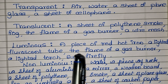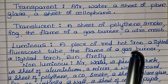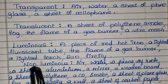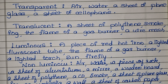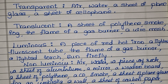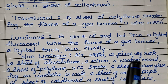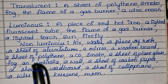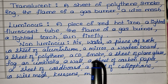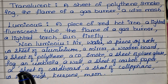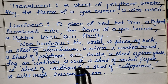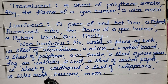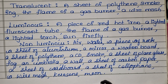Luminous — a piece of red hot iron, a lighted fluorescent tube, the flame of a gas burner, a lighted torch, sun, firefly. Non-luminous — air, water, a piece of rock, a sheet of aluminium, a mirror, a wooden board, a sheet of polythene, a CD, smoke, a sheet of plain glass, fog, an umbrella, a wall, a sheet of carbon paper, a sheet of cardboard, a sheet of cellophane, a wire mesh, kerosene, moon.